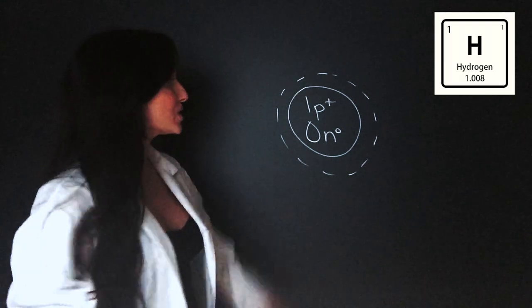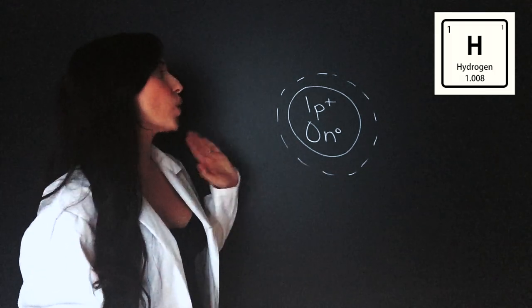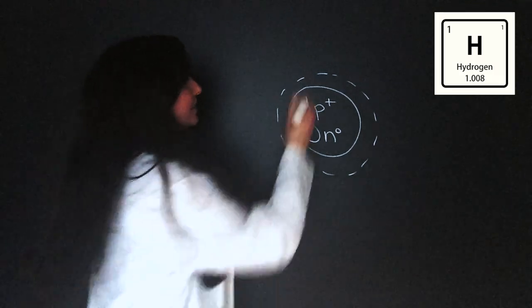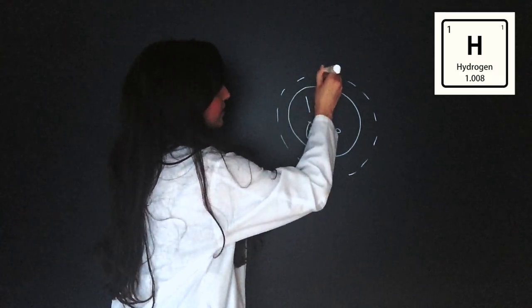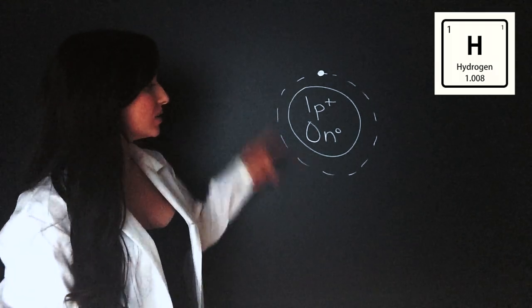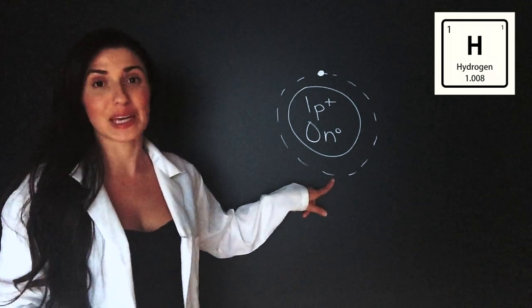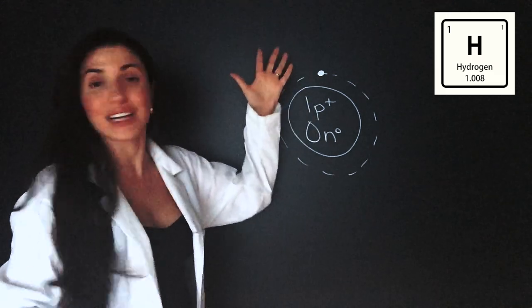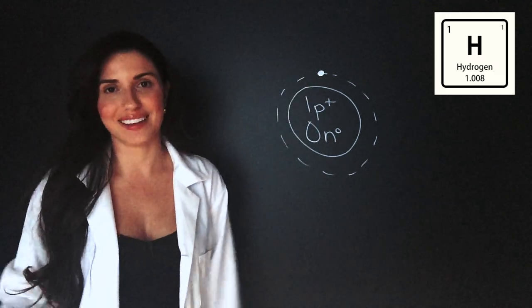So in this case, neutral hydrogen has one electron to balance out the proton. So we put that up here. Hydrogen is so reactive because it only needs one more electron to complete this shell. It has one electron to give away and it can bind with almost anything.